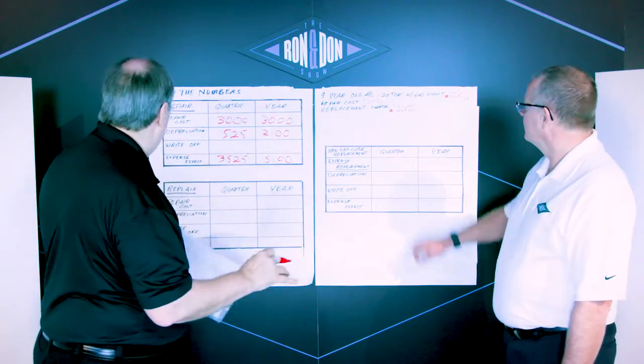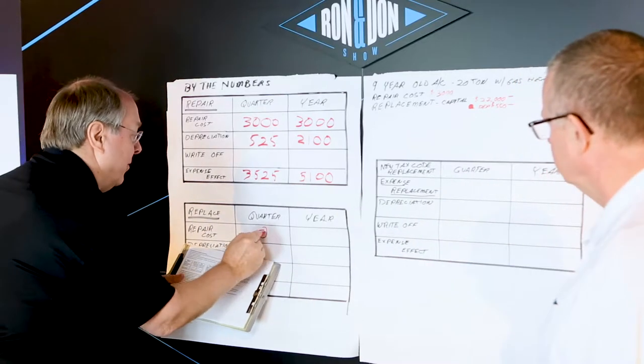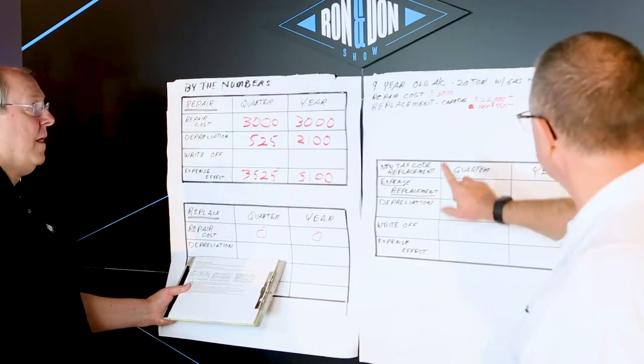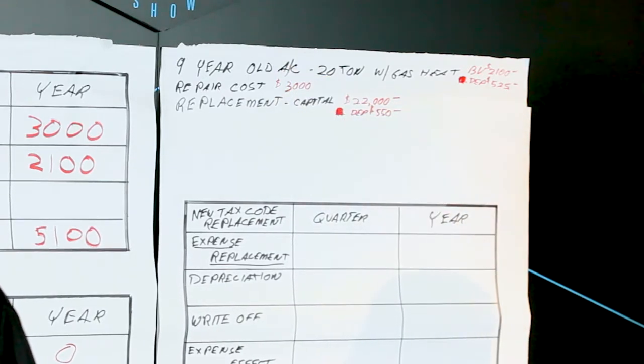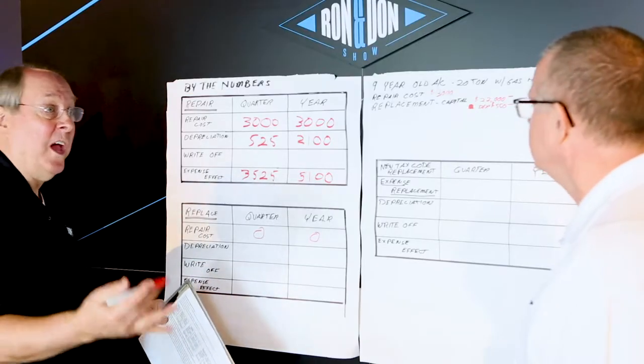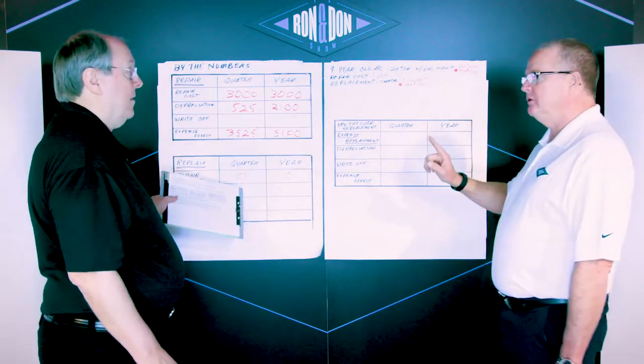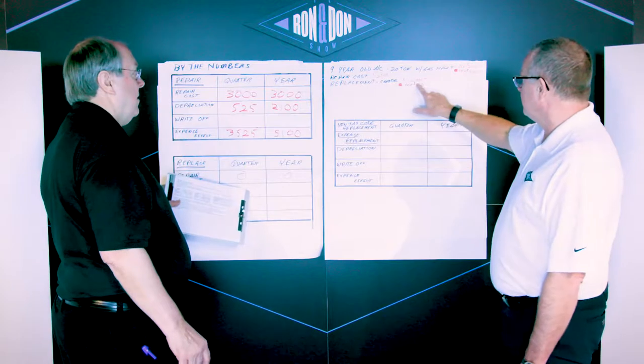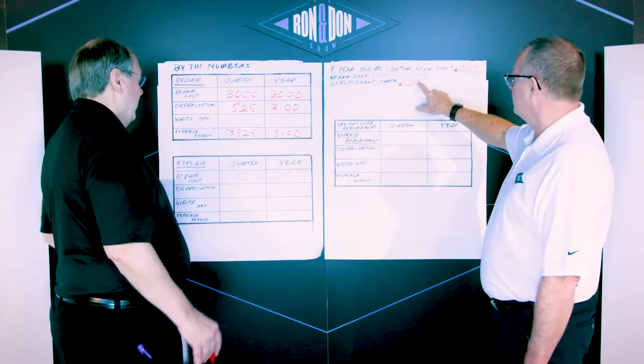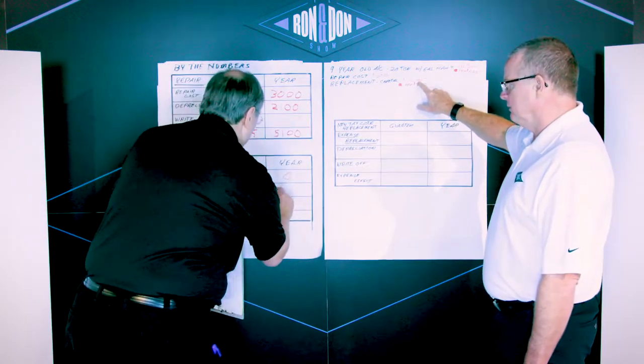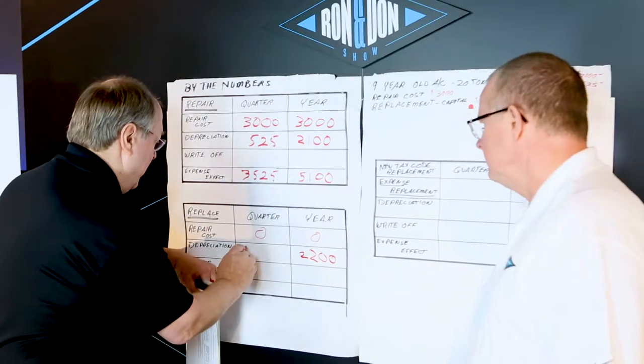Now if we're going to replace a unit, let's use some numbers. We aren't going to have any repair costs. So that's zero. Let's assume that we're replacing that with a like type of equipment and the total replacement cost is $22,000. And we're going to depreciate that over 10 years. So no repair costs in the replacement scenario, but what we do have, we've got a replacement cost of $22,000.